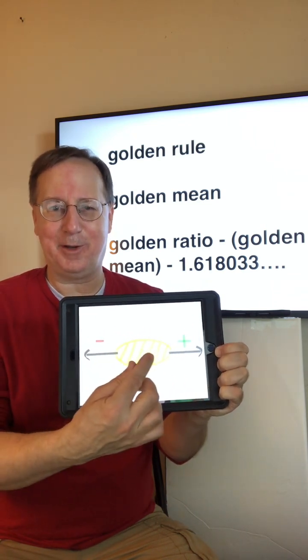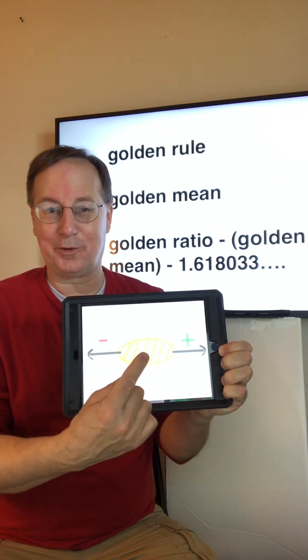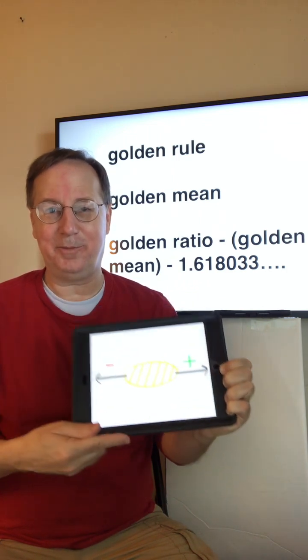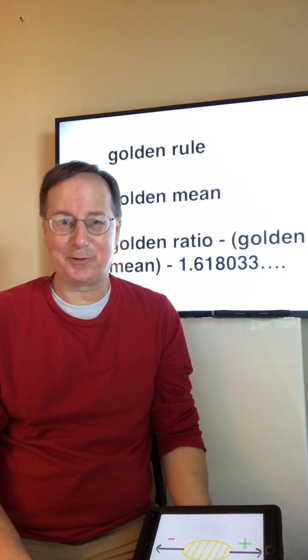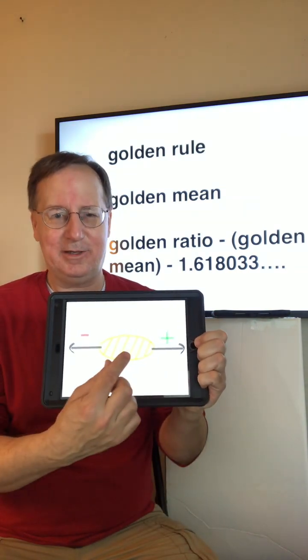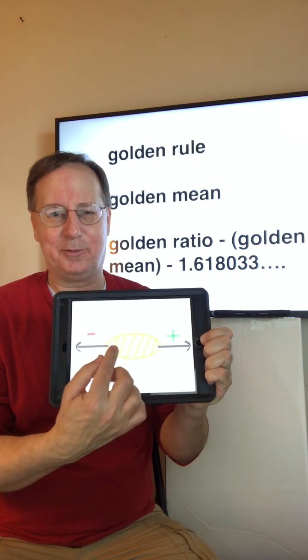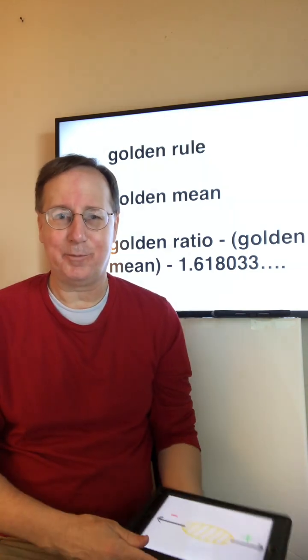But here is the right amount. Whether for someone like myself, that might be an hour a day, or for a world-class marathon runner, that might be running 100 to 150 miles a week. So the Golden Mean regarding exercise would be the right amount for that person.